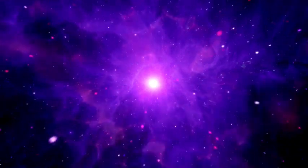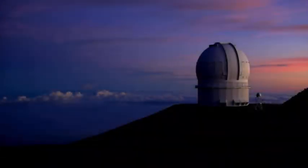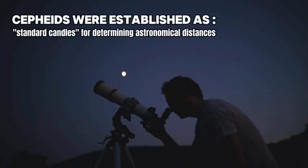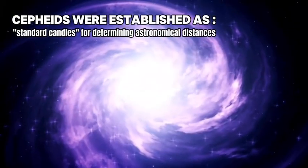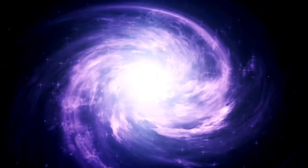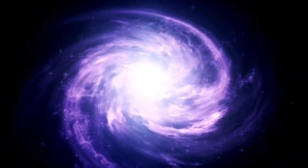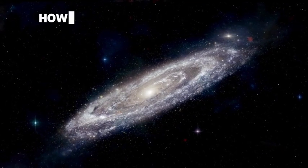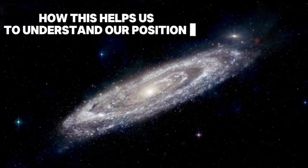This simple yet profound relationship, now known as Leavitt's Law, allowed astronomers to determine the distance to Cepheids by measuring their pulsation periods. Cepheids were established as standard candles for determining astronomical distances. Leavitt's discovery provided astronomers with a method to measure distances up to 20 million light years. Now, you might wonder how this helps us understand our position in the Milky Way. To answer this, we need to introduce another key figure, Edwin Hubble.